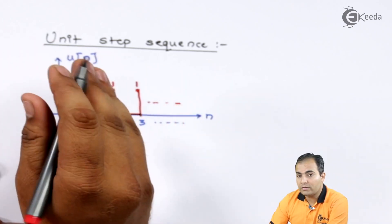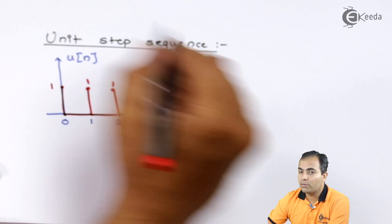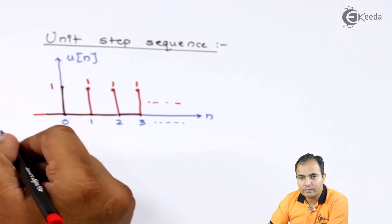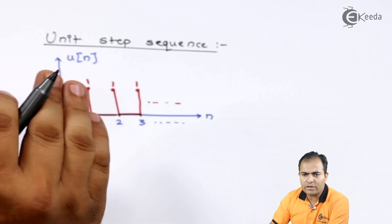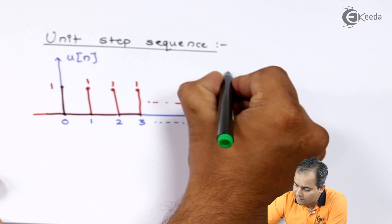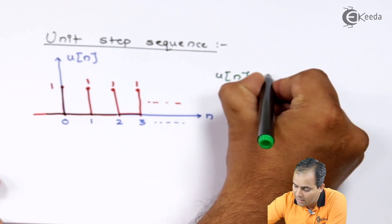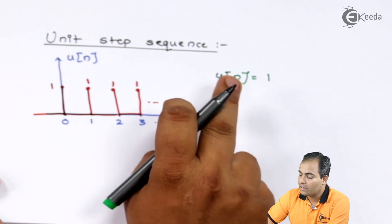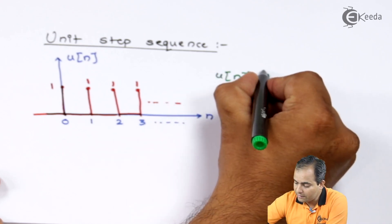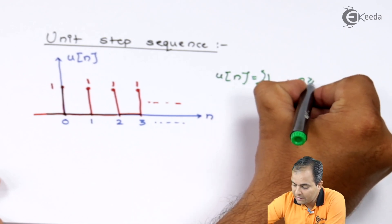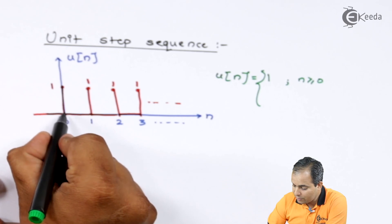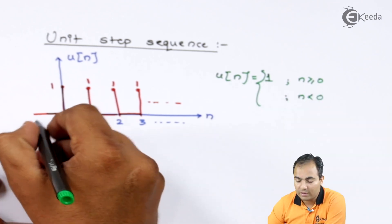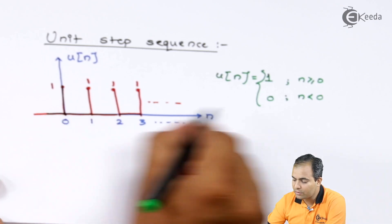This is all for n greater than or equal to 0. But what about n less than 0? For n less than 0, the amplitude of the graph is 0. How do we write the equation for this function? We can write: u(n) equals 1 when n is greater than or equal to 0, meaning for n equals 0 and all values greater than 0 the amplitude is 1. But for n less than 0, the amplitude is 0.